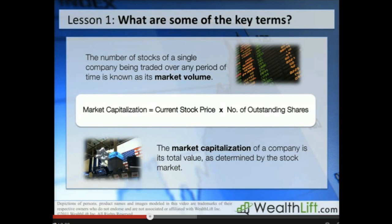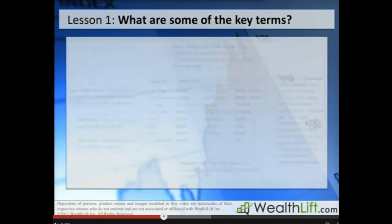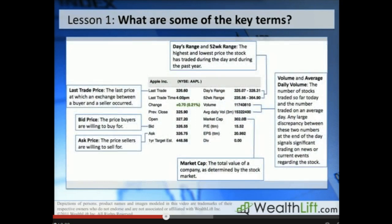As a general rule, larger, more established companies have less volatility in their stock price but also less room to grow, while smaller, newer companies have greater volatility but greater potential price appreciation. The lowest and highest price that a stock has traded for in any particular day is known as its day range. The lowest and highest price a stock has traded for in the past year is known as its 52-week range, which gives you a picture of how much the stock price has fluctuated in the past year.